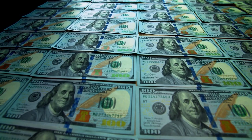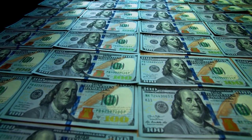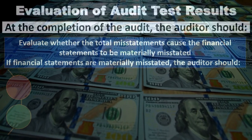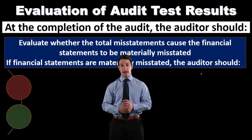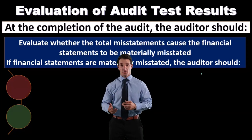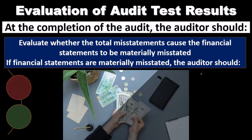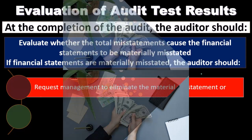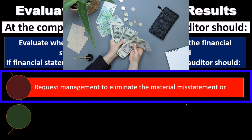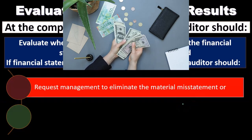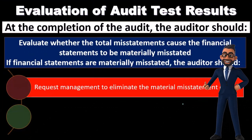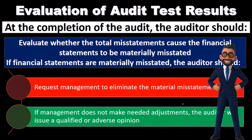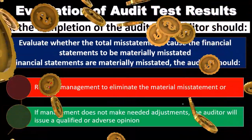If the financial statements are materially misstated, we don't want to issue anything other than a clean, unqualified opinion if we can avoid it. Our objective is to be able to say the client put their information together in accordance with generally accepted accounting principles and we tested the assertions and they did indeed do so. If that's not the case, we request management to eliminate the material misstatement — it could be an error, not necessarily fraud — and make the needed adjustment to be in accordance with GAAP.